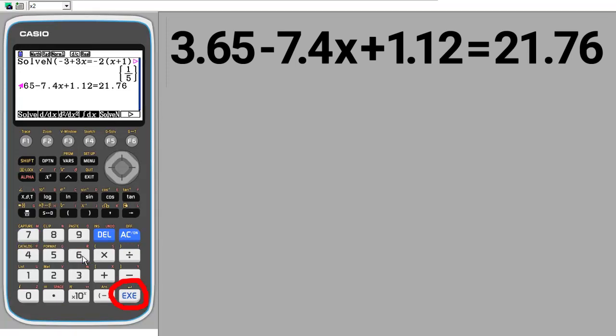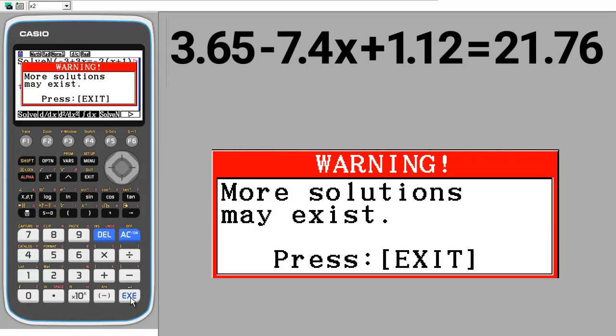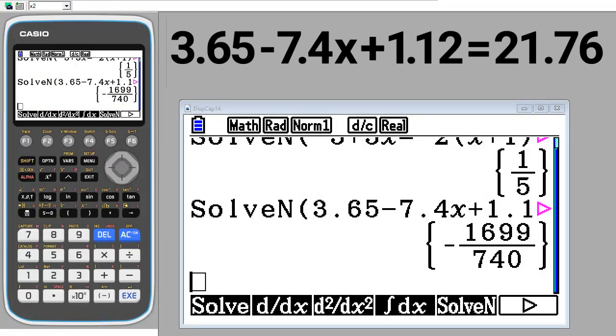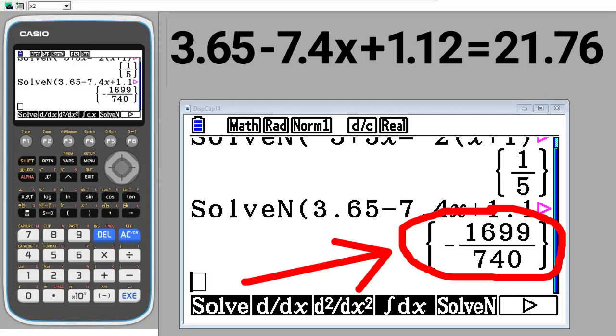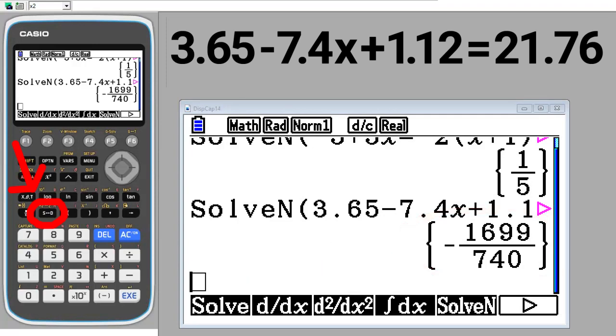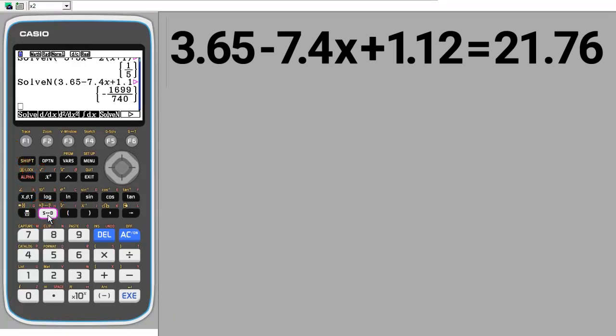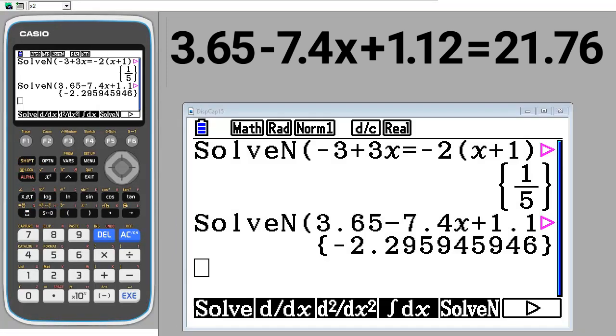To get the answer, press the Exe button. We get this red error message. Don't worry about it. Press the Exit button to make it go away. OK. And there is our answer. But we want it in a decimal format. To convert this fraction into a decimal format, press this SD button. And there is the answer in decimal format.